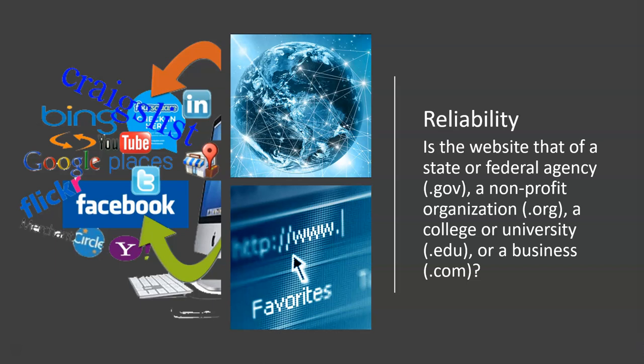Reliability: Is the website that of a state or federal agency? Is there a .gov at the end of the web address? A non-profit organization — .org? Lots of times these are museums, churches, political organizations like the Democratic Party, Republican Party, or the Green Party. A college or university — .edu? Or a business — .com? .coms exist to try to sell you something. Keep that in mind.